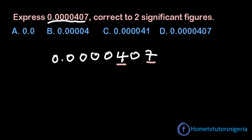Then what about the zero in between? That takes us to the second rule, which says that any zero between two significant digits is also significant.